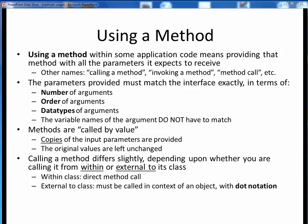When we call a method it's important that we adhere to its interface exactly. That means we need to provide it with the number of inputs it's expecting, in the order it's expecting them, and with the data types it's expecting. However, the names of the variables we provide to the method do not have to match the names in the interface.